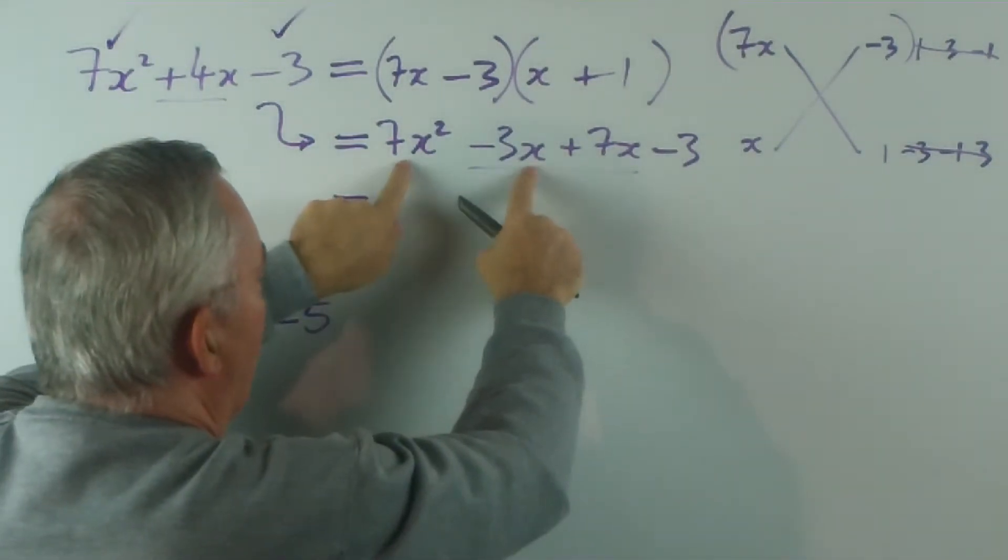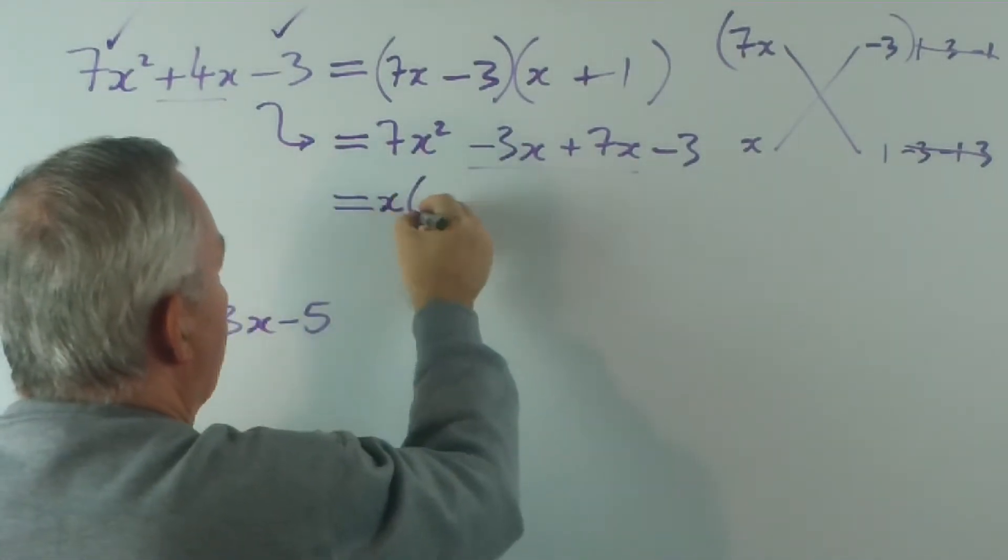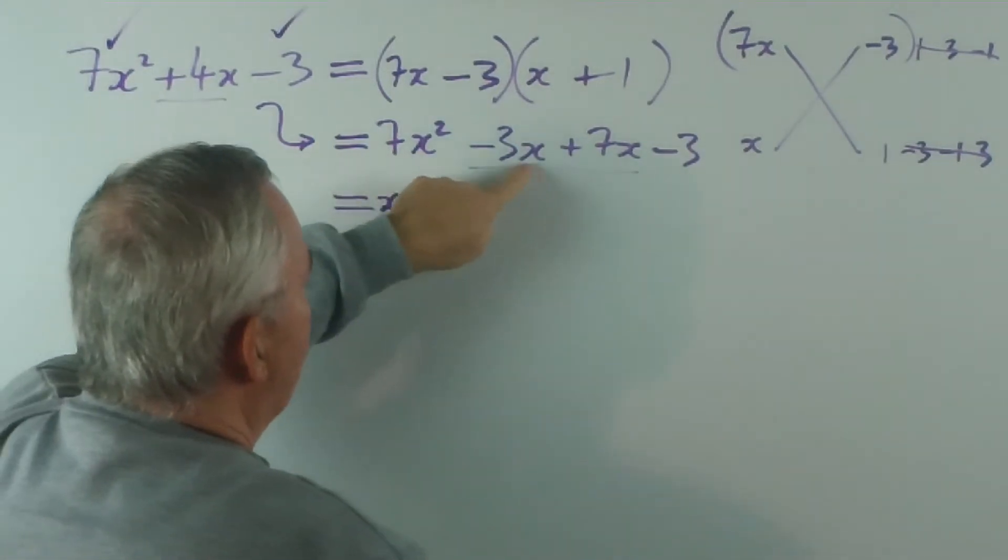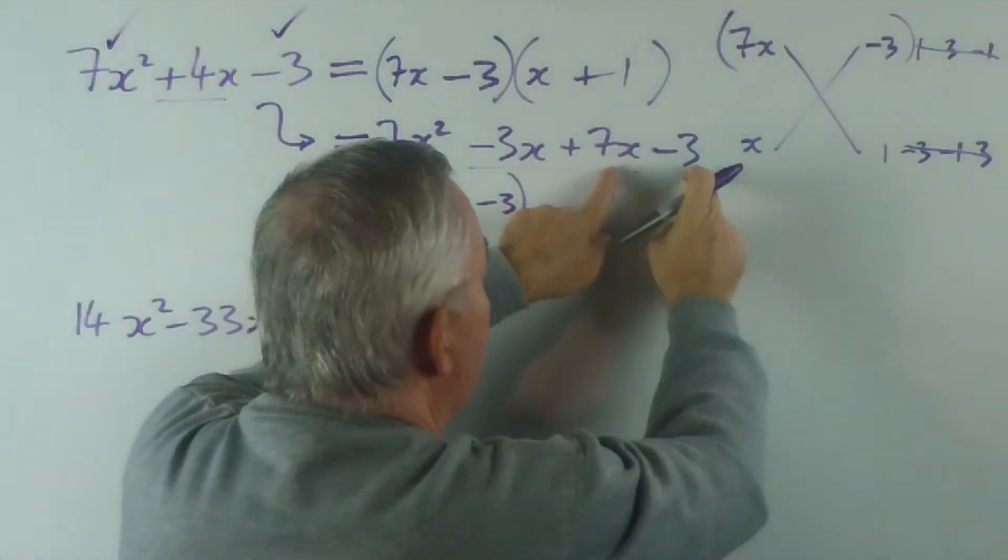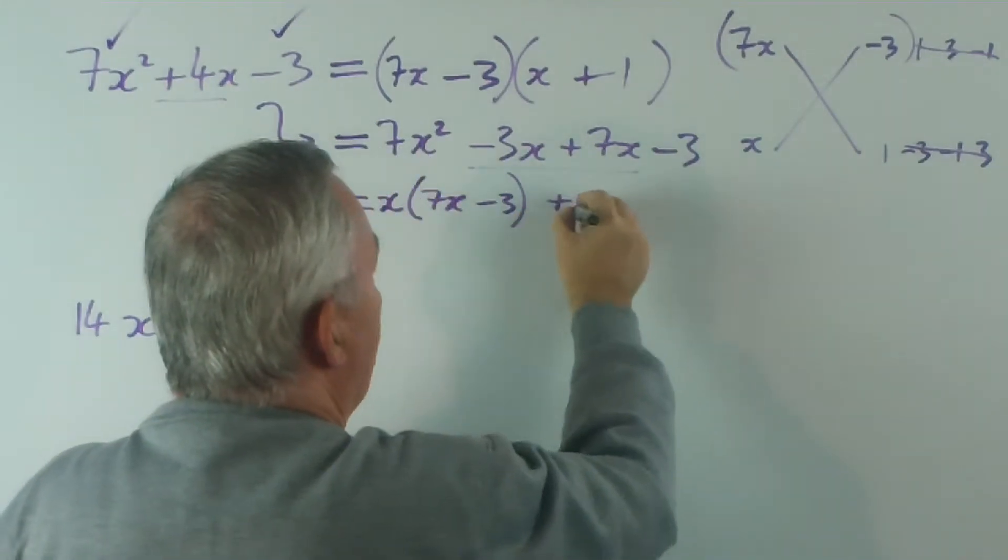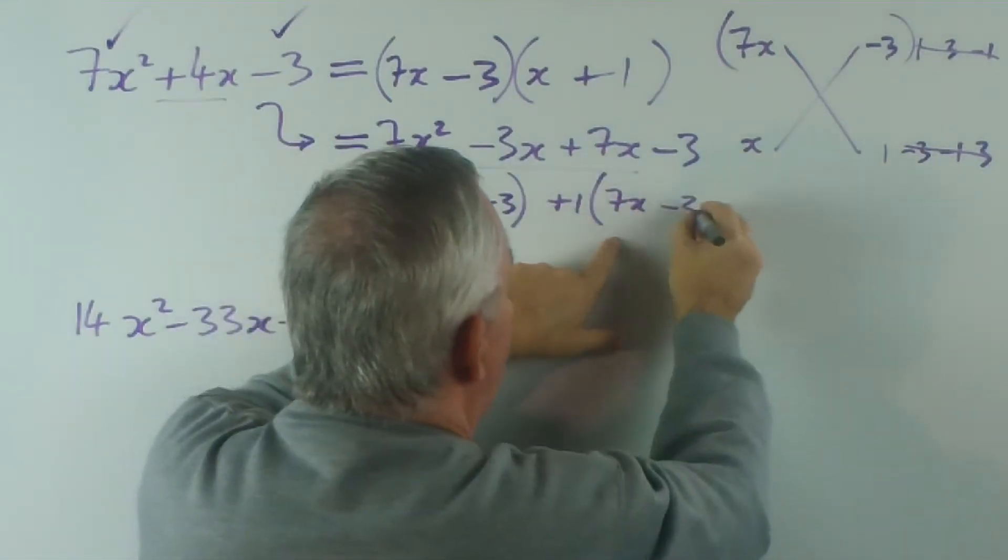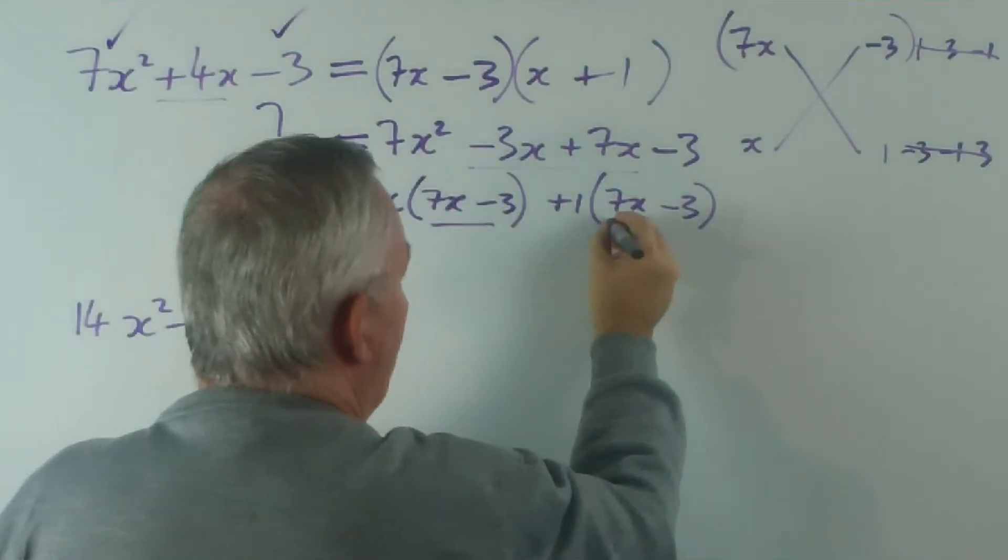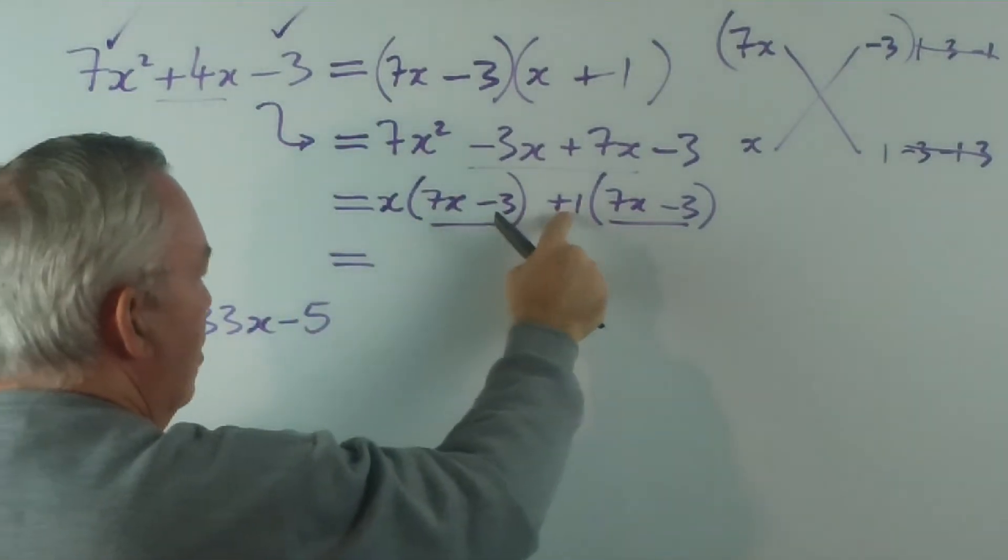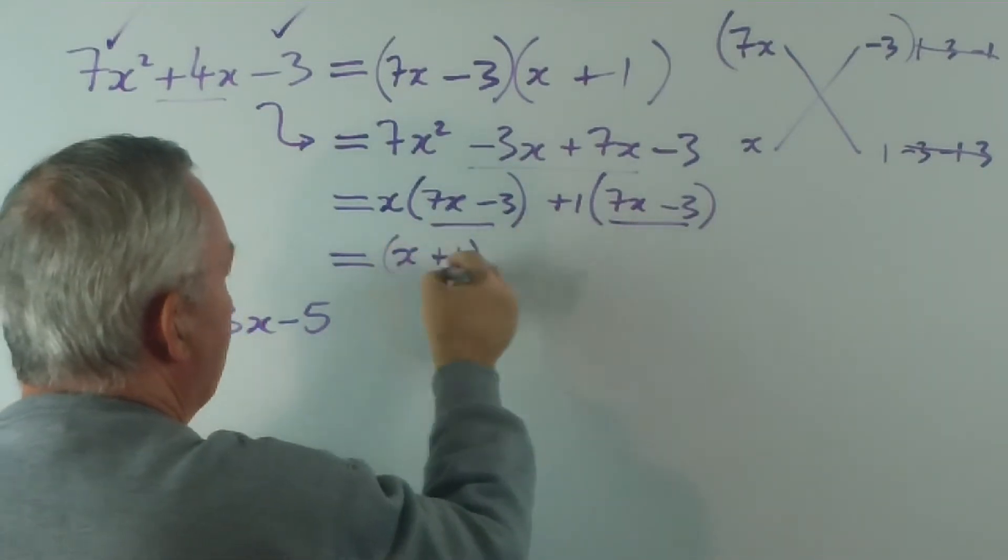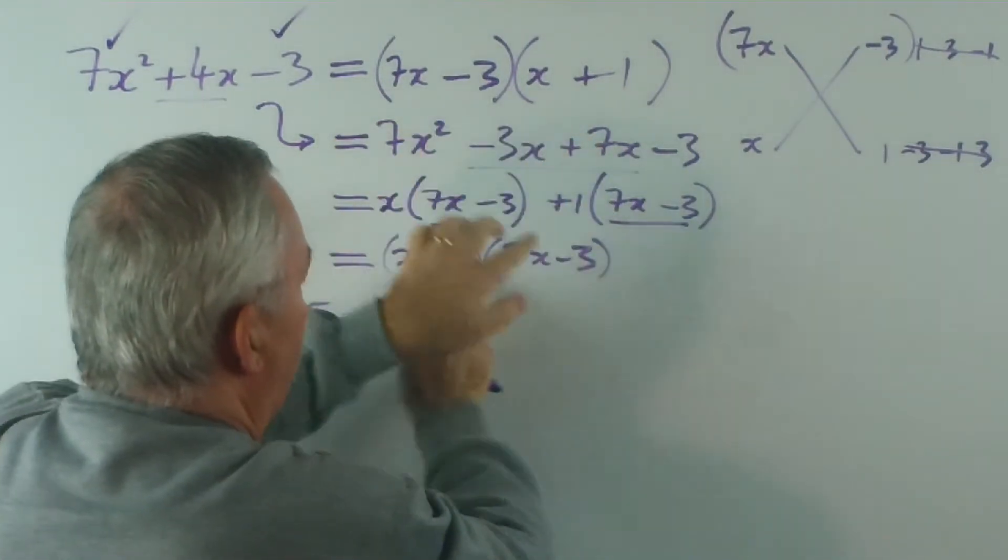And then, because we now have four terms, we factorize by grouping them in two. Now, these two, what do they have in common? Well, obviously, no number is in common except 1, which is redundant. But they have an x in common. So, let's take the x out. This is x times 7x. This is x times negative 3. And then we move to the last two. Well, these have absolutely nothing in common except one. So, I will take the one out. 1 times 7x is 7x. And 1 times negative 3 is negative 3. And these should be exactly the same. And since I have x lots of this and plus 1 lot of that, I have x plus 1 lots of 7x minus 3, which you can see is the same product.